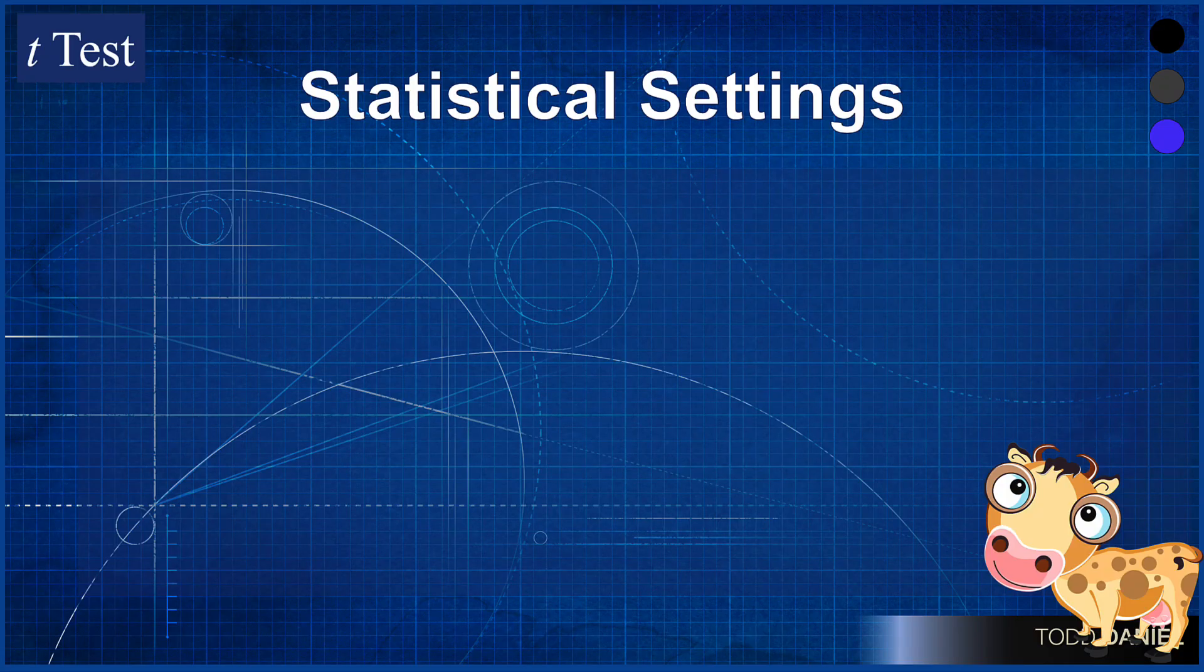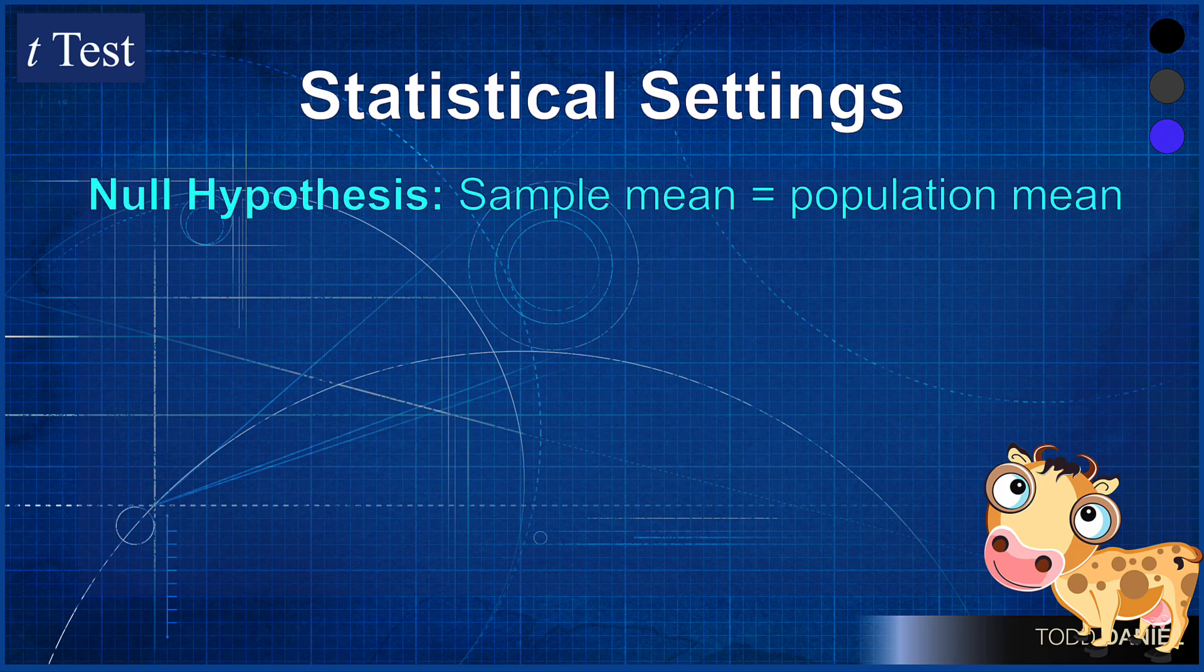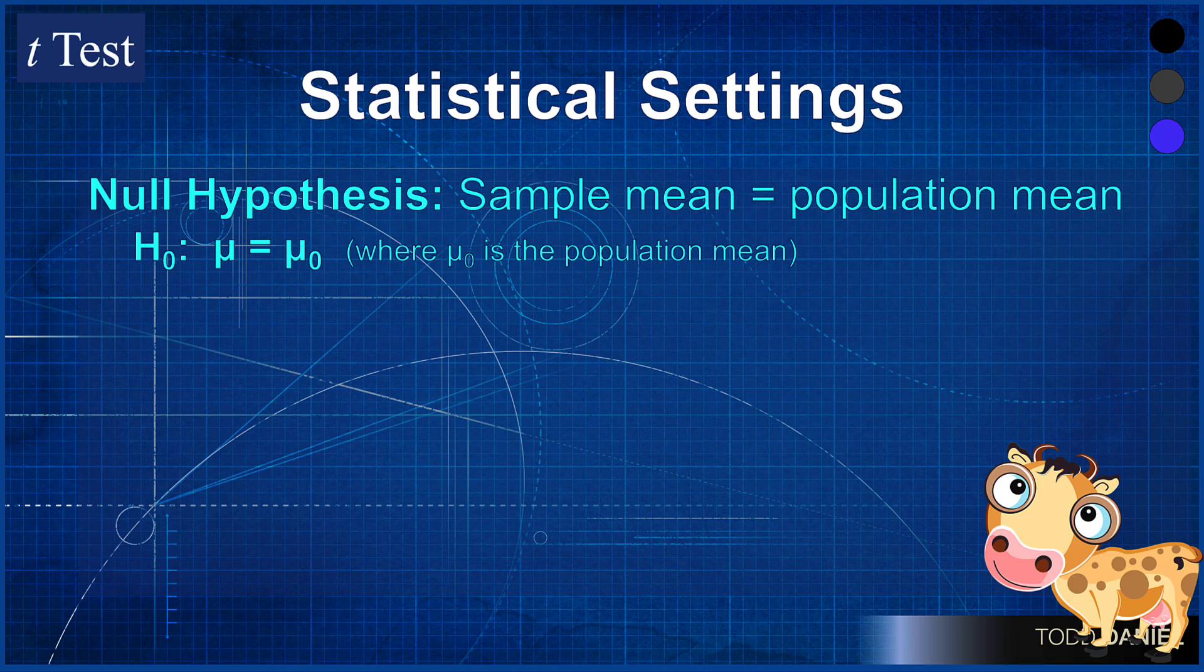The statistical settings for a one sample t-test work like this. Our null hypothesis is that the sample mean is the same as the population mean from which it was drawn. The sample mean is no different than the population mean. We would write this as H₀: μ = μ₀. However, we're going to take the actual population value, which we know, and substitute that population mean where you see μ₀.